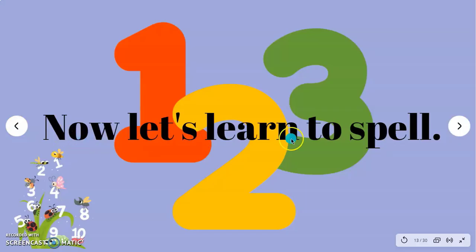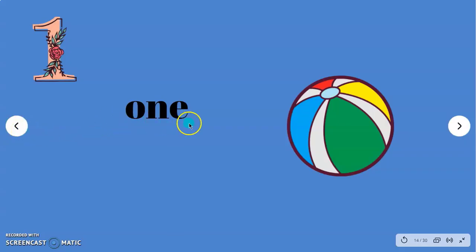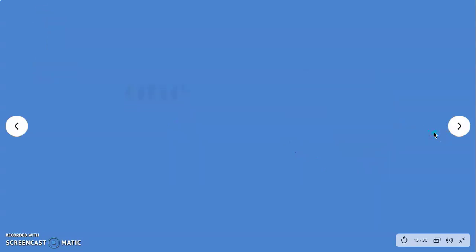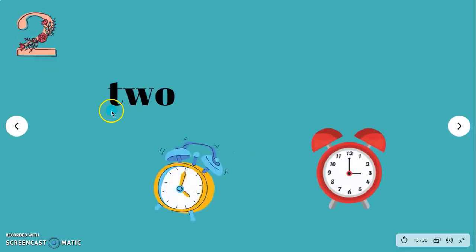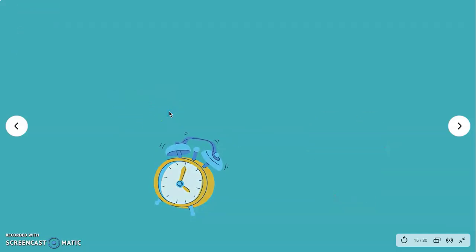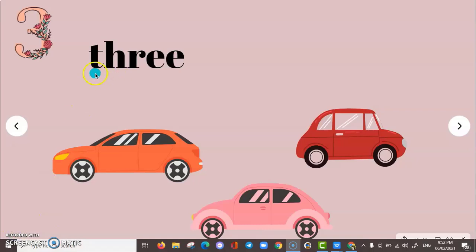Now let's learn to spell. 1, 1, O, N, E, 1. 2, 2, 2, T, W, O, 3.